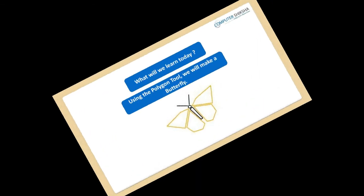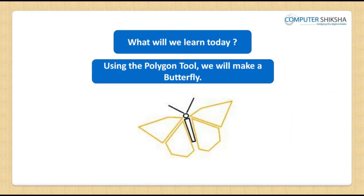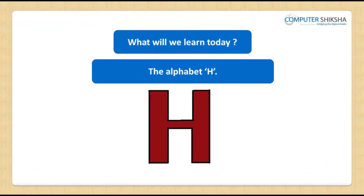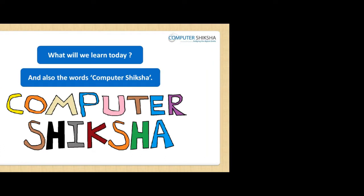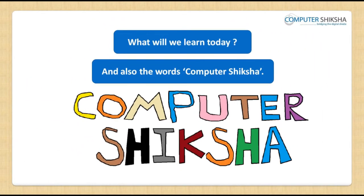Using the Polygon Tool, the pictures that we will make today will be of a butterfly, the alphabet H, and also the words Computer Shiksha. Later, we will also make some other pictures.